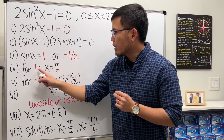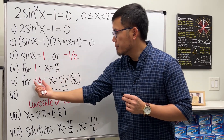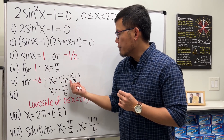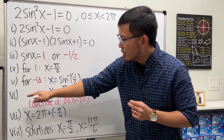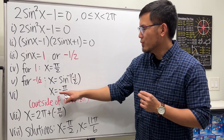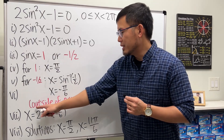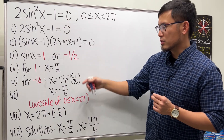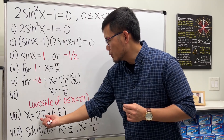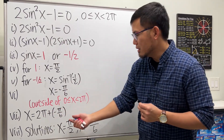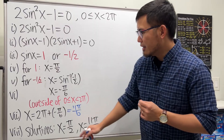For sine x equals 1, the solution is x equals π over 2. For sine x equals negative 1 half, they say x equals the inverse sine of negative 1 half. Using a calculator, that gives x equals negative π over 6, which is outside the interval we want. So they add 2π, since the period of sine is 2π, giving 11π over 6.